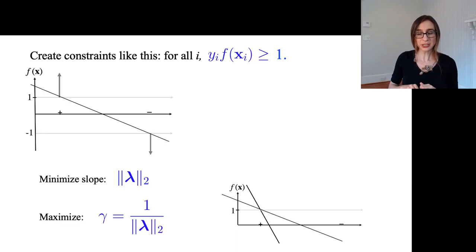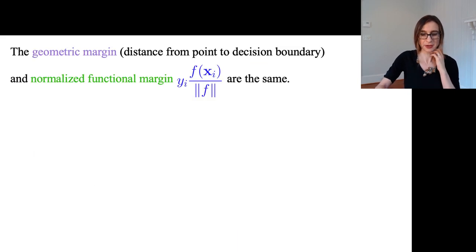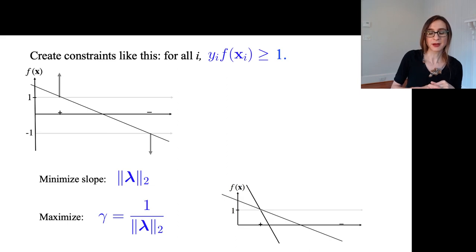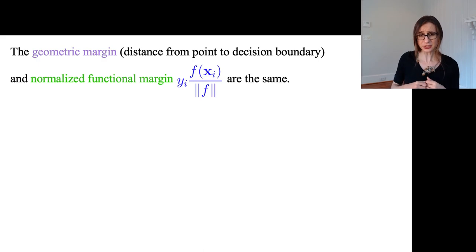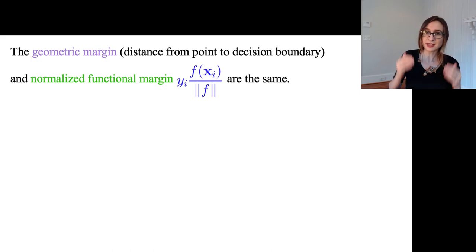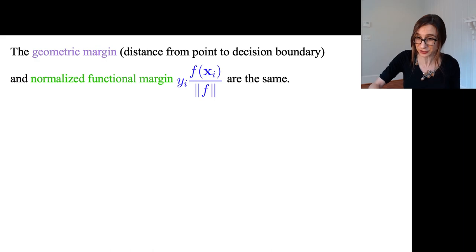As I mentioned before, the definition we chose for gamma forces gamma equals one over the norm of the lambdas. So we're actually ending up minimizing that slope by maximizing one over the slope. As it turns out, the geometric margin — the distance from the point to the decision boundary — is the same as the normalized functional margin. That's not something I can just assert; I actually have to prove it. Let me show you how that works.